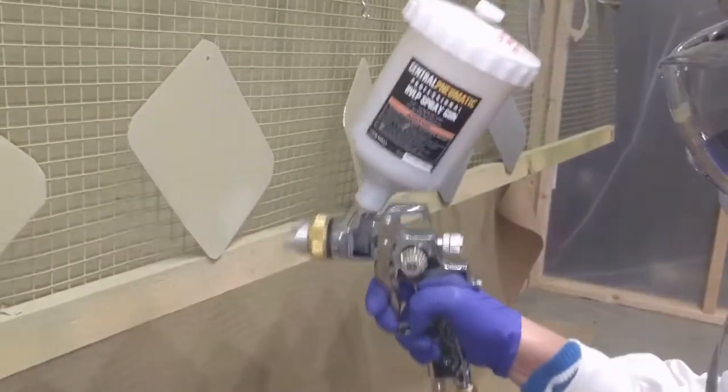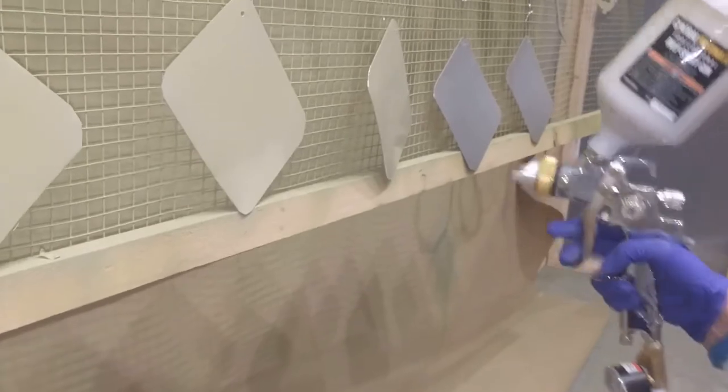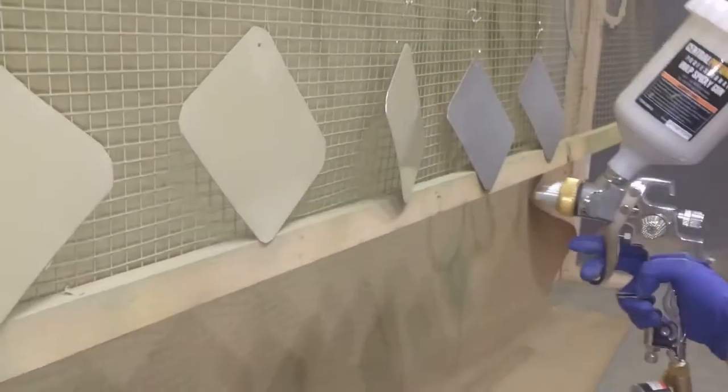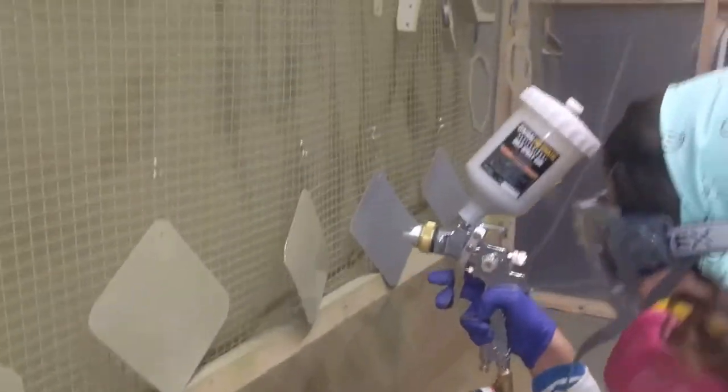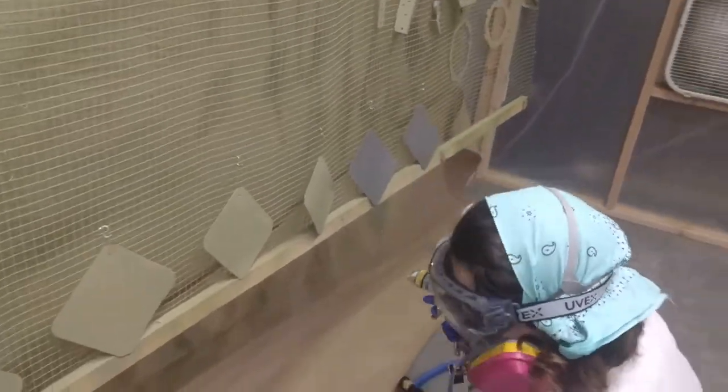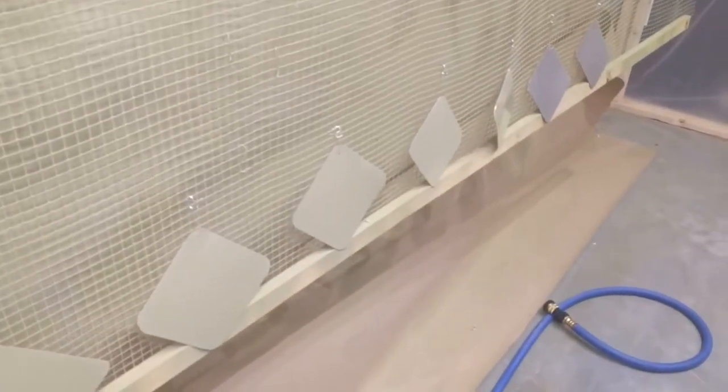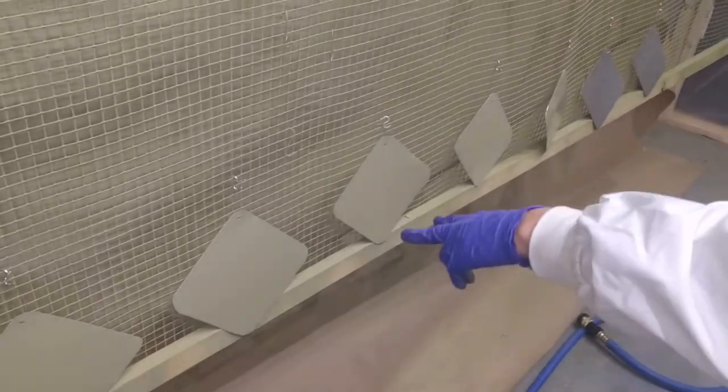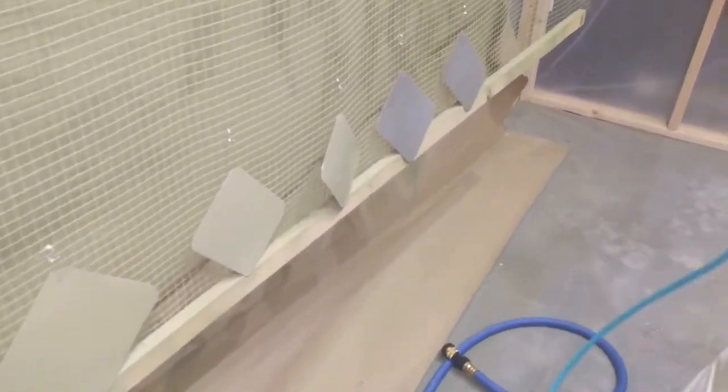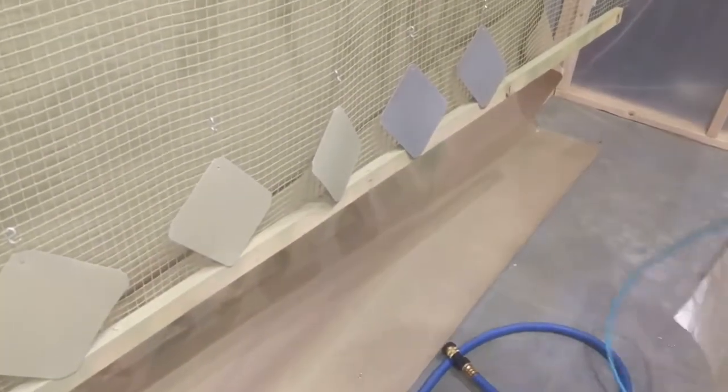All right, so now we ran dry. So just for the record, the first three were with the Finish Max. So one, two, and three, they're actually numbered. The four and five were sprayed with Fuji. No, no, one and two were Fuji. We did two. Oh yeah, two. Okay, sorry. One and two were Finish Max. Three and four, Fuji. Five and six, the pneumatic.